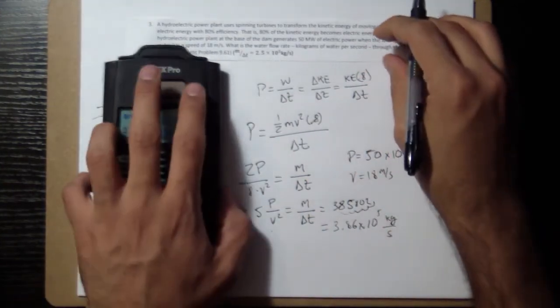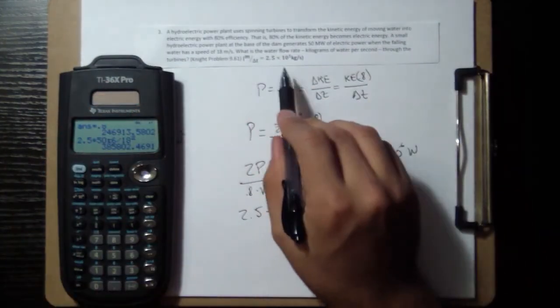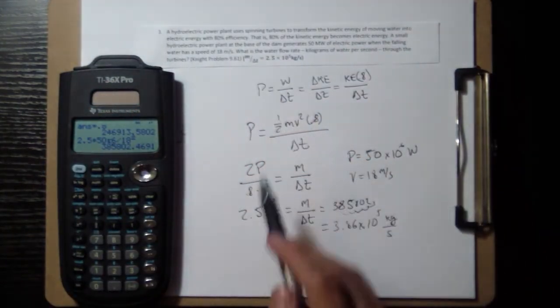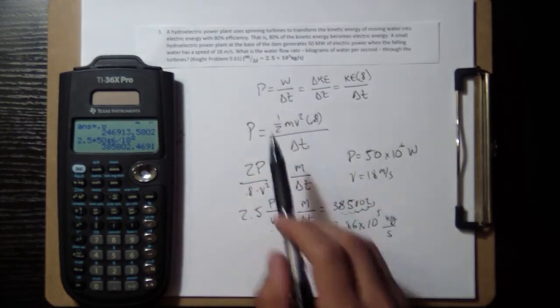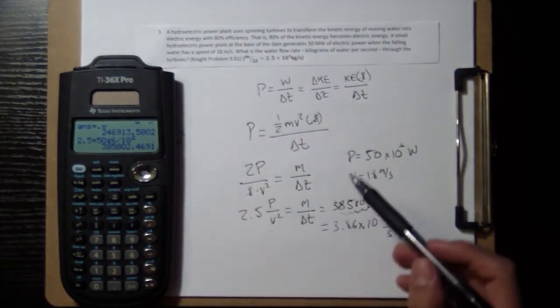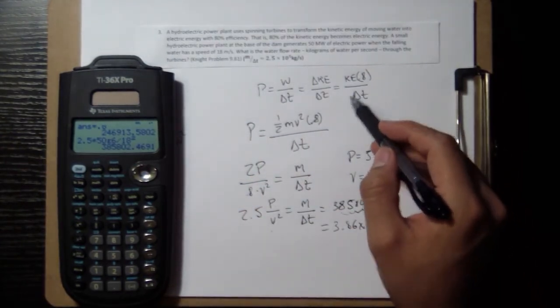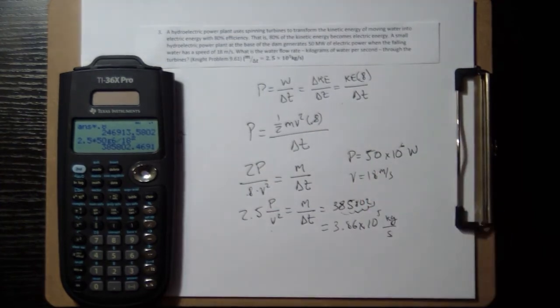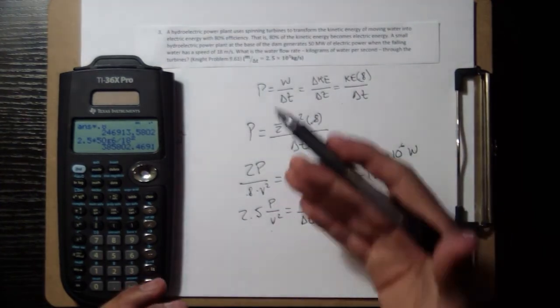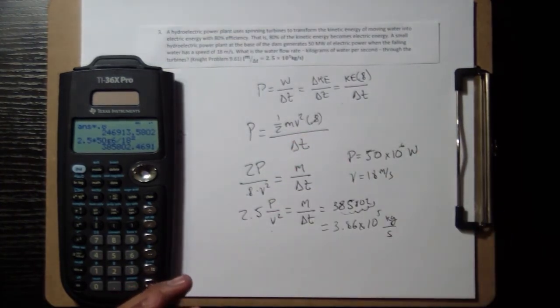So that's different from what they have in the answers. And I think this is a mistake, because this answer here, you can get that number if you divide by 0.8 instead of multiply.